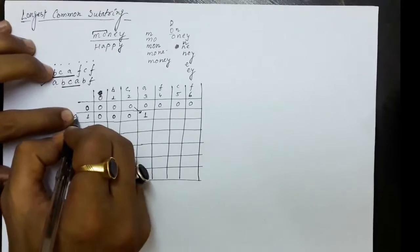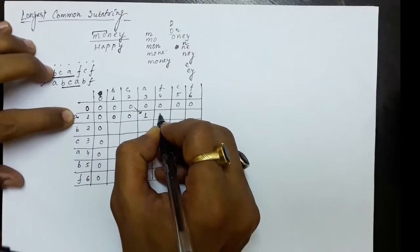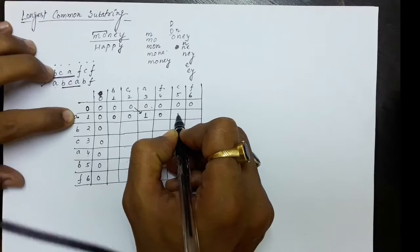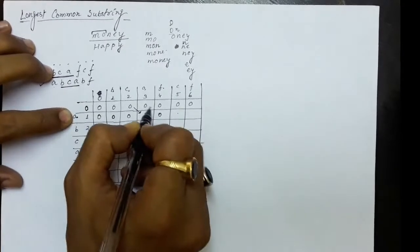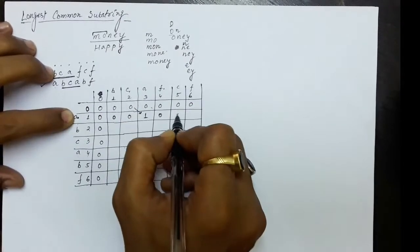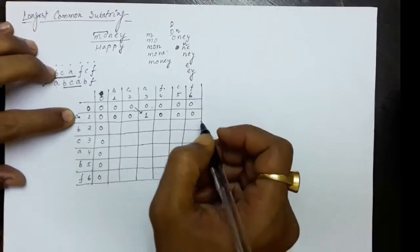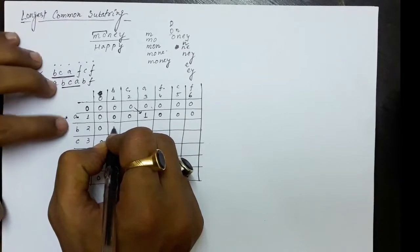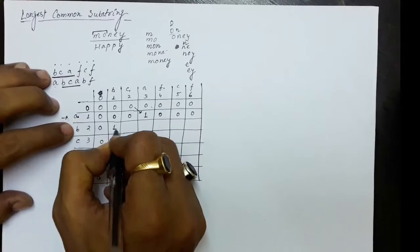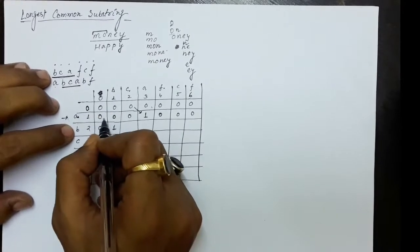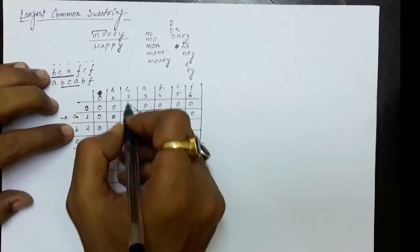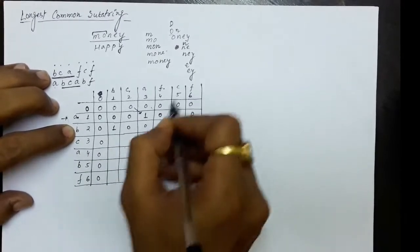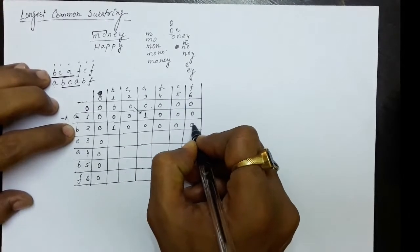We take values from the diagonal. A and F — no match, 0. A and C — no match, 0. Then B and B — there is a match; diagonal value plus 1. B and C — no match, 0. B and A — no match, 0. B and F — no match, 0. B and C — no match, 0. B and F — no match, 0.